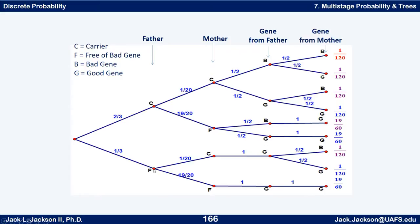If the father is free but the mother is a carrier, it's half and half good and bad from the mother. If they're both free, we definitely get a good gene. So let's multiply these probabilities: two-thirds times one-twentieth times one-half times one-half is one over 120. Similarly, the next branch also multiplies out to one over 120 and so forth. You can verify that all those probabilities add up to one.